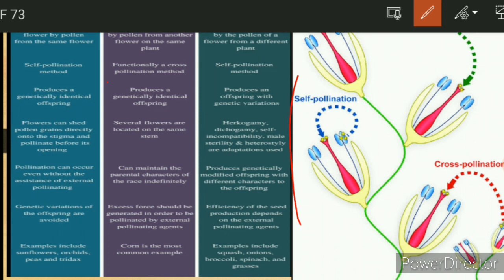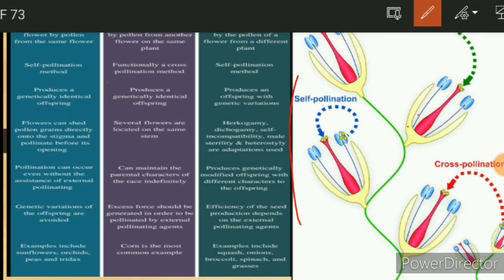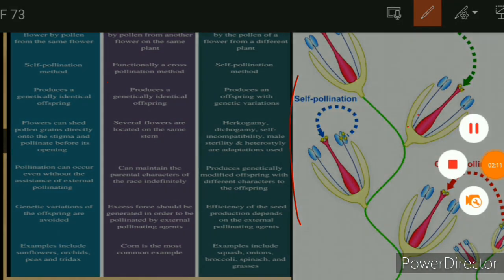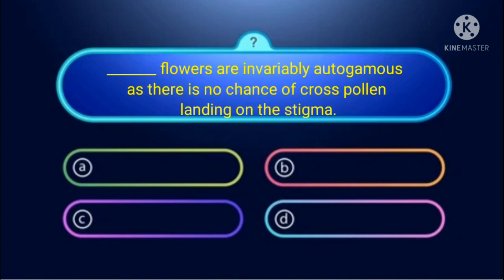We already studied the differences between geitonogamy and xenogamy in the last lecture. In this lecture, we focus on MCQs based on pollination and types of pollination.